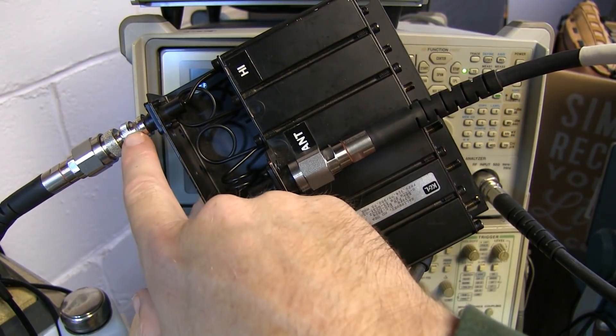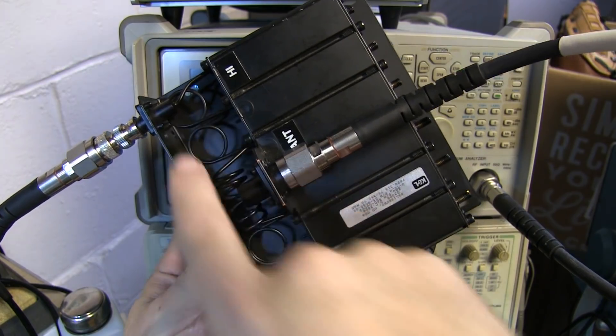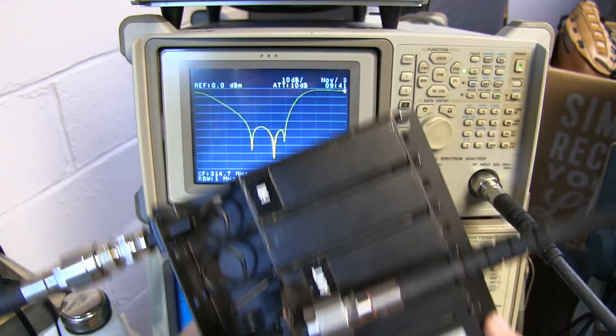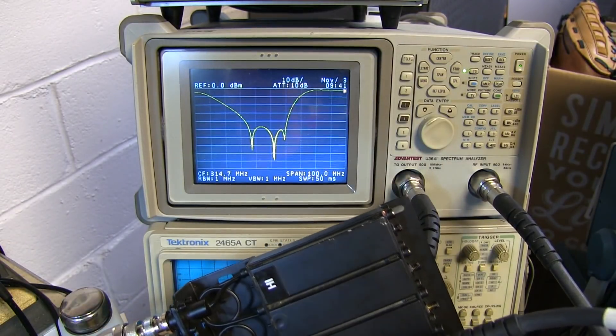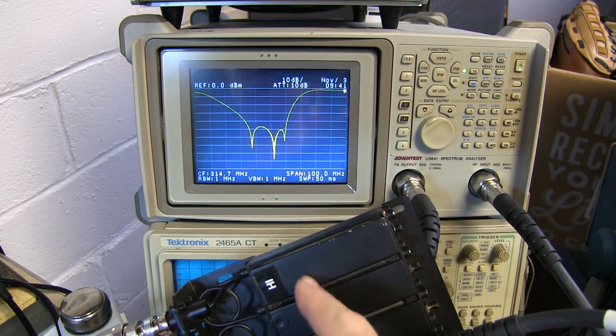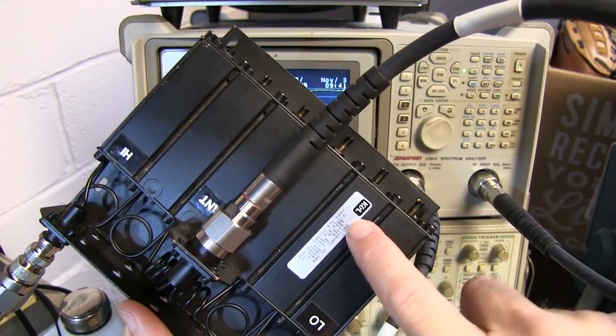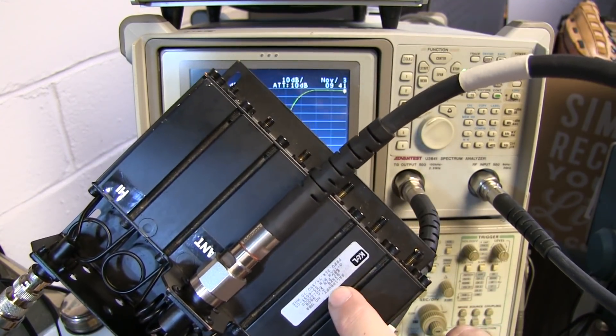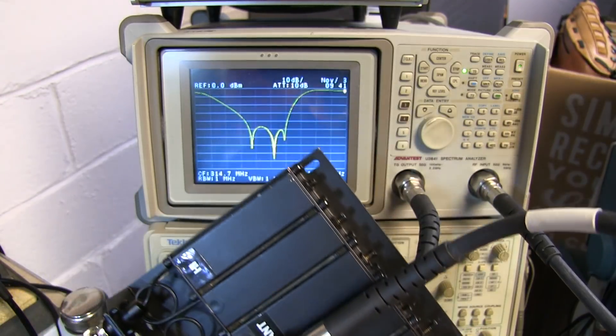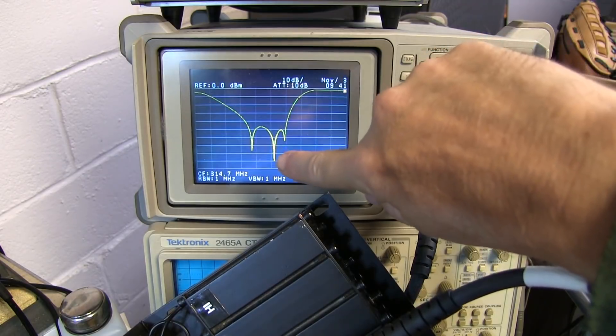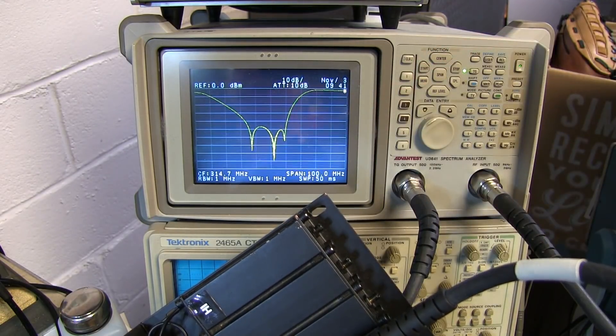We've got the tracking generator output connected to the high path port, the antenna connected to the spectrum analyzer input, and we've set up the sweep to encompass the notch that should appear in that high path. The sticker on the unit indicates that the low path frequency should be 314.75 megahertz. So I've got that set up as the center frequency of my sweep and I'm looking at a 100 megahertz span.